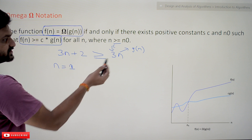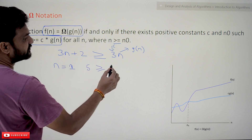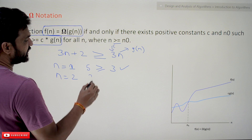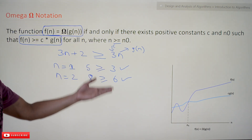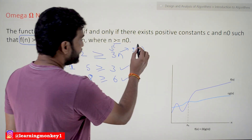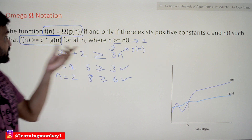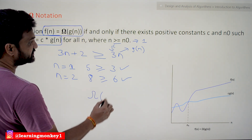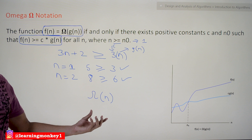Let's check: for n equals 1, it is 3 plus 2 which is 5, greater than or equal to 3 — yes, it is true. For n equals 2, it is 6 plus 2 equals 8, greater than or equal to 6 — yes, it is true. Similarly for n equals 3, and for all values of n greater than or equal to 1. So here n-naught is 1. Therefore 3n plus 2 can be represented as Omega of n, where g of n equals n.